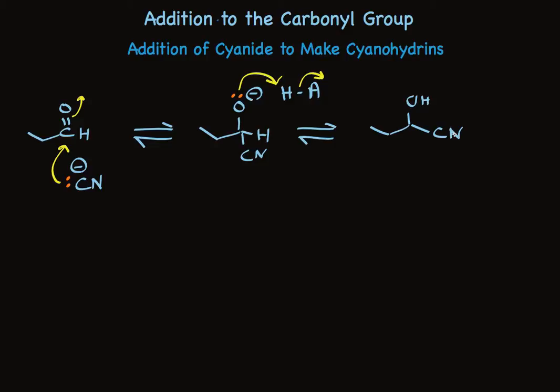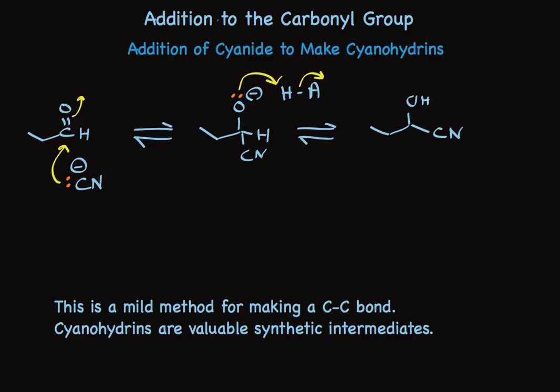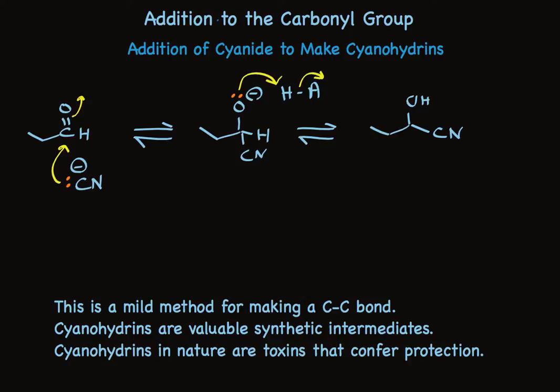Are cyanohydrins important? Yes. First of all, this is a very mild way to make a carbon-carbon bond, and carbon-carbon bonds are important as they allow us to build bigger molecules from smaller ones. Related to this, cyanohydrins are important intermediates that let us make other kinds of compounds by manipulating either the hydroxyl group or the nitrile. And thirdly, there are several naturally occurring cyanohydrins. These compounds tend to confer protection on plants as protected cyanohydrins that can release cyanide gas, which is lethal.